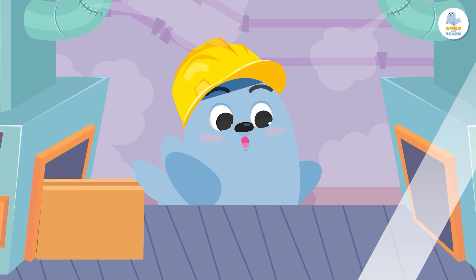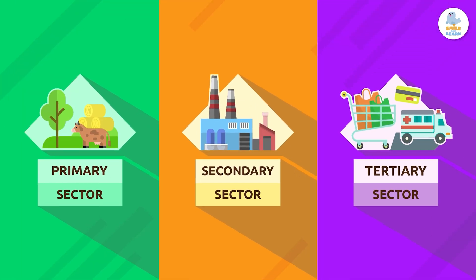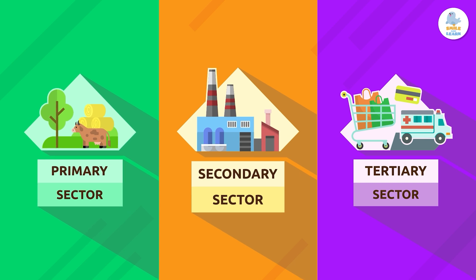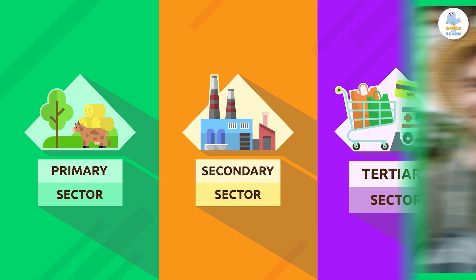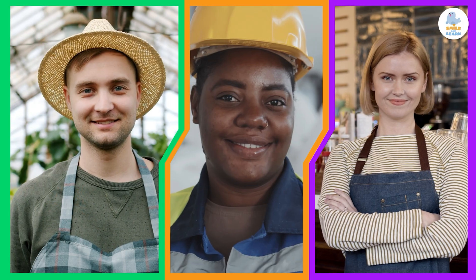Come along, and I'll tell you all about it. As you probably already know, we can divide economic activities into three sectors: the primary sector, the secondary sector, and the tertiary sector. Each sector includes a different type of activity, but all three are essential to meet people's needs.